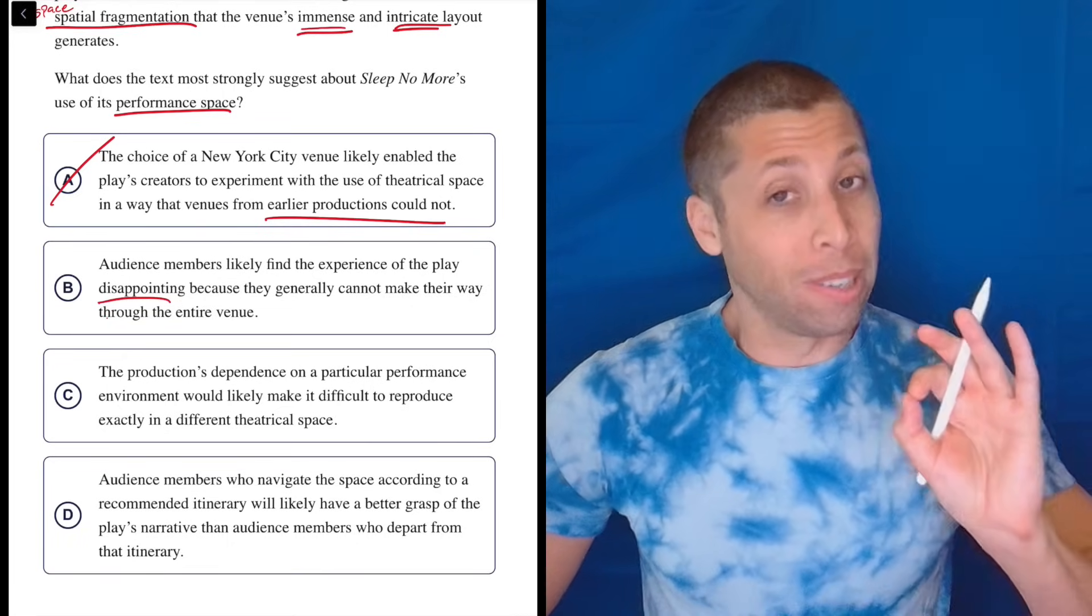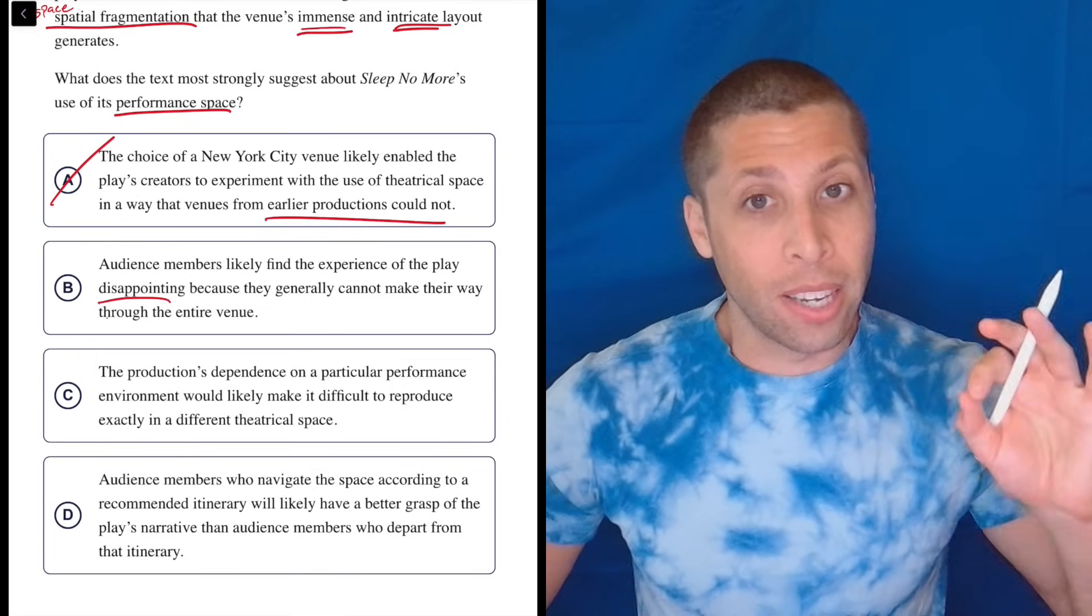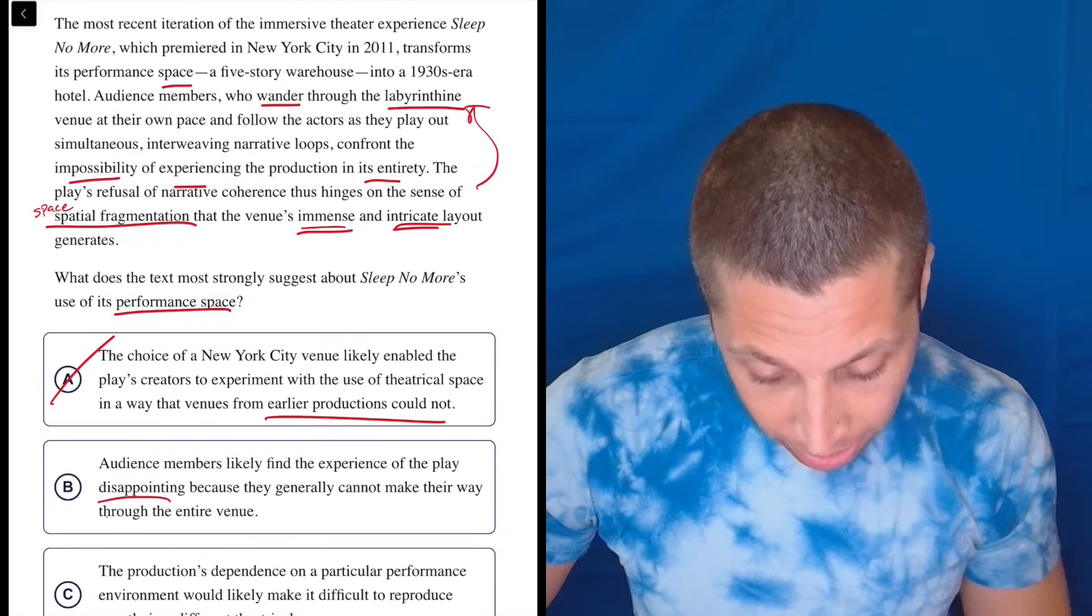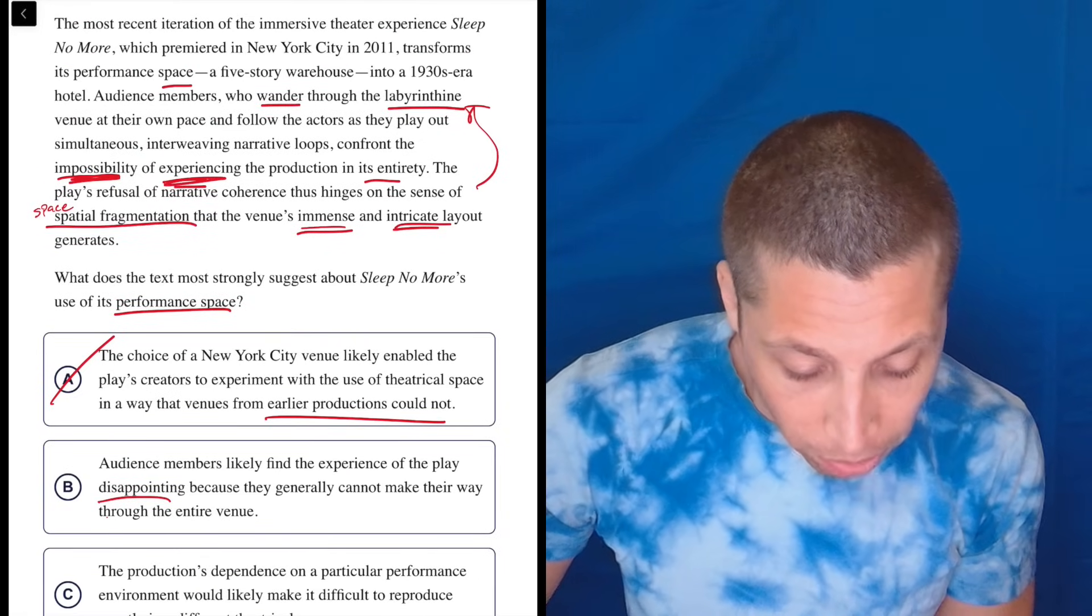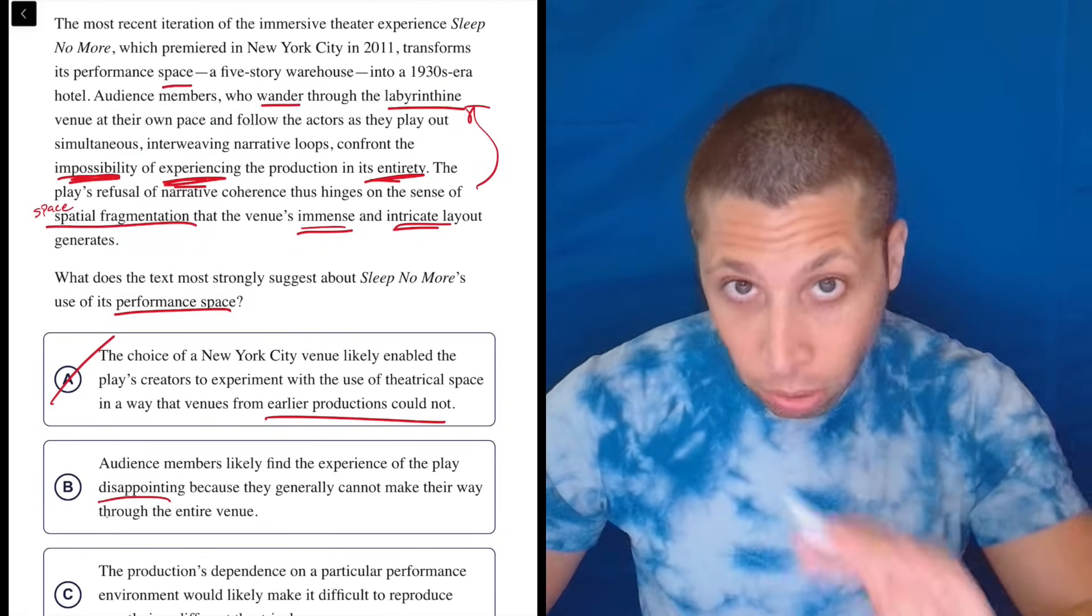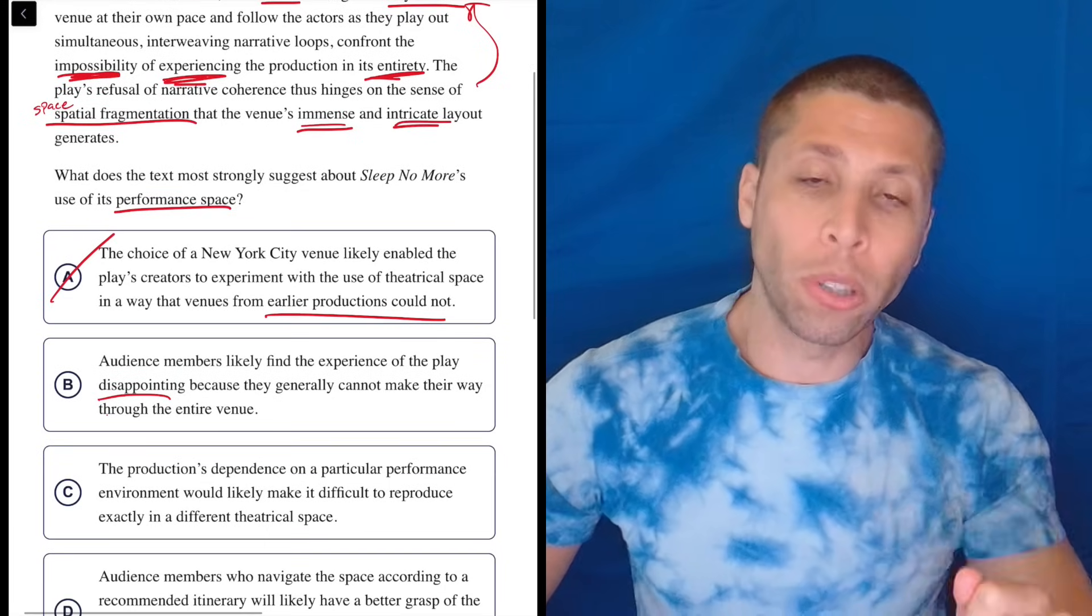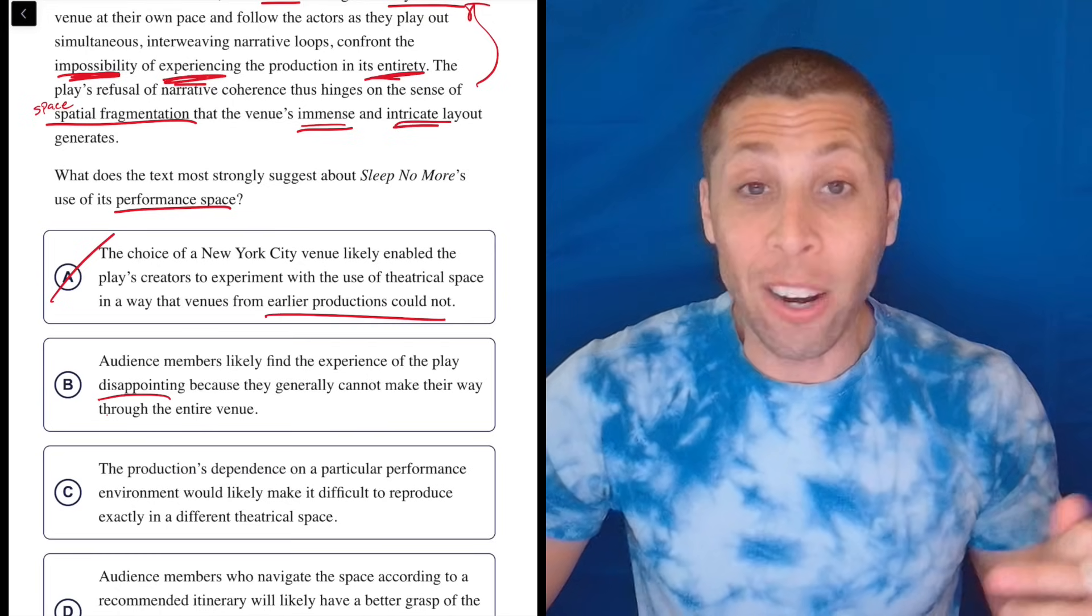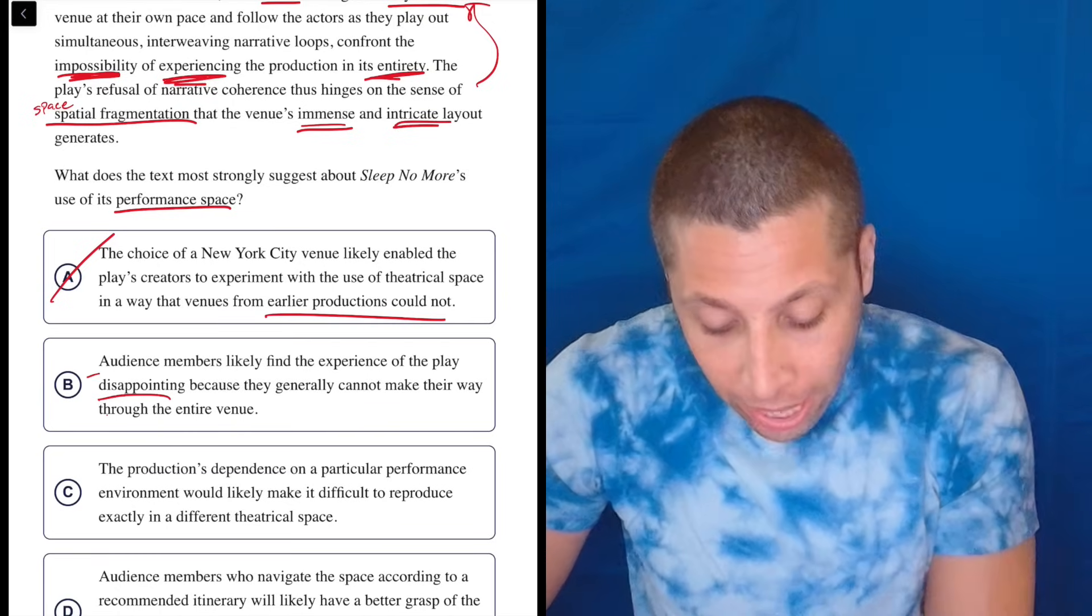Now, a lot of that is correct, right, because it does say that they cannot get all the way through, right? It says it is impossible to experience the entire thing. They literally say that. But the strong word in choice B is that that's disappointing. We don't know that. They don't say that. This is a clear negative connotation.